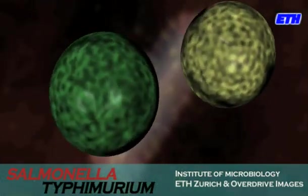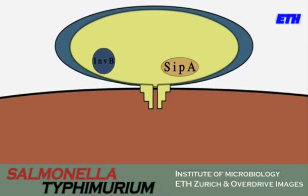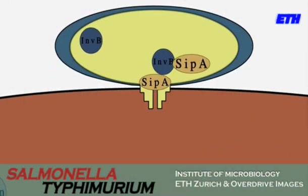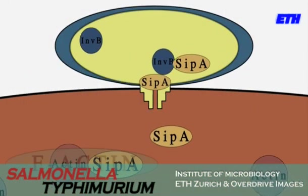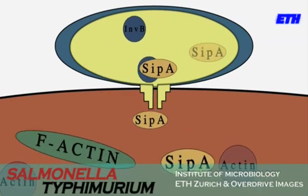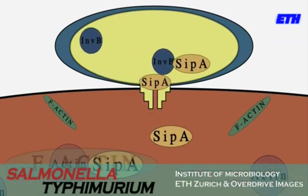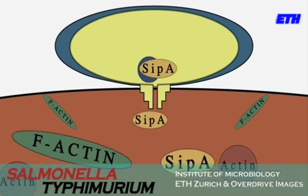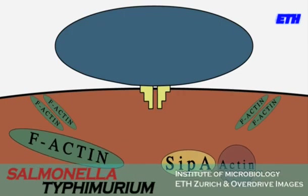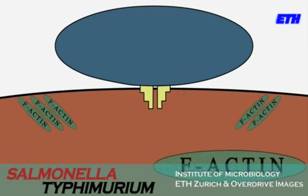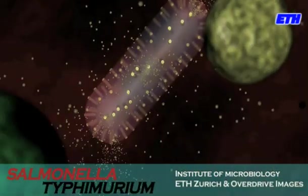Via this type 3 secretion system, Salmonella Typhimurium injects a whole cocktail of toxins — the effector proteins CYP-A, SOP-E, and SOP-E2 — into the intestinal cell. Inside the host cell, the effectors interact with cellular proteins and lipids and manipulate their function.